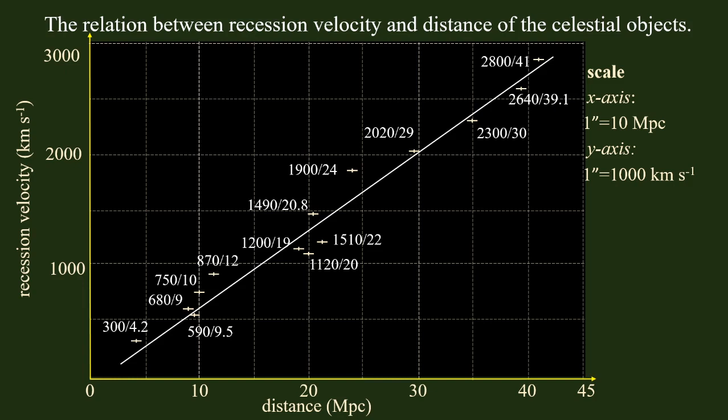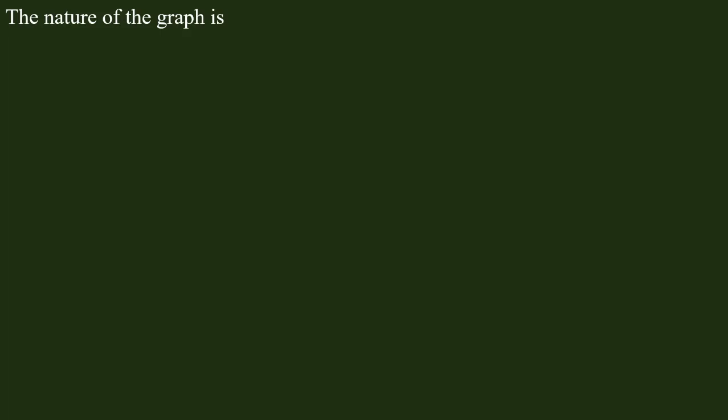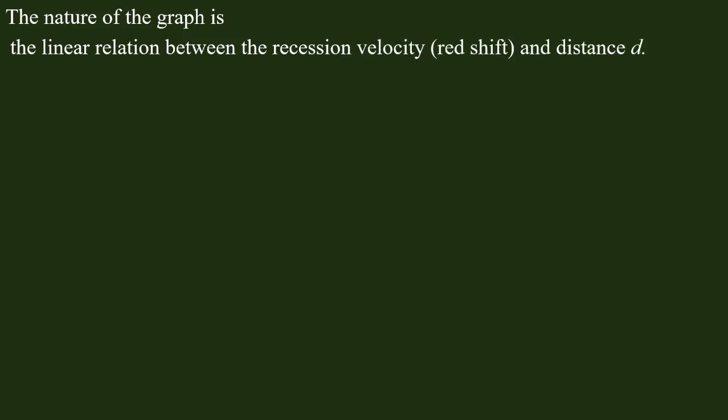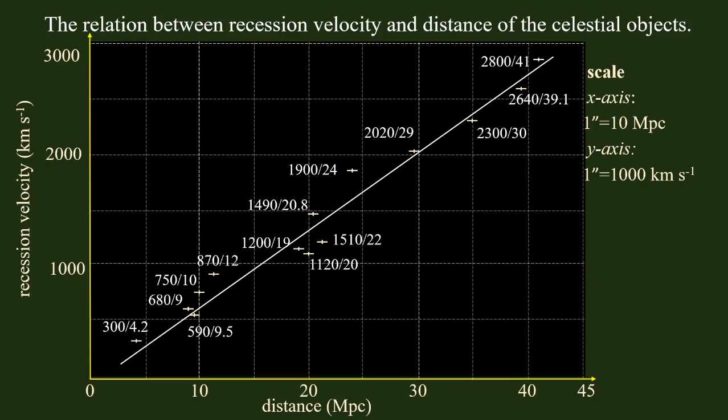You can see that the nature of the graph shows a linear relationship between the recession velocity and the distance. The graph has a positive slope, meaning as distance increases, recession velocity increases proportionally, consistent with Hubble's Law.